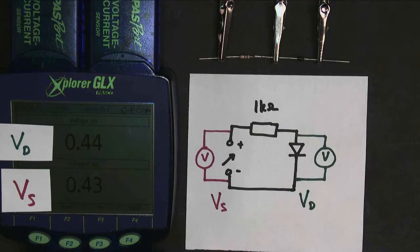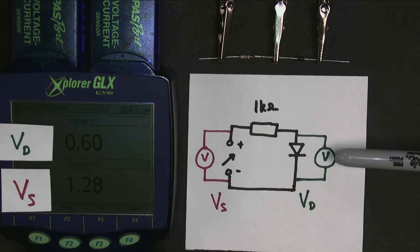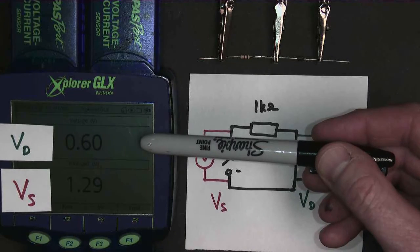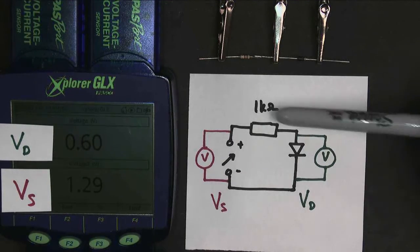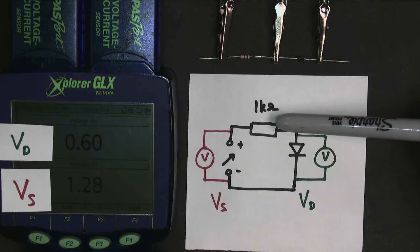However, if I turn the supply voltage up further and make it go to maybe 1 volt or 1.2 volts, you'll see now that the diode voltage is no longer equal to the supply voltage. It's remaining at 0.6 volts. That's because current flows around the circuit and there's some voltage drop across the resistor.